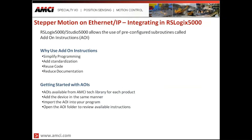In RSLogix 5000 or Studio 5000, we also have the ability to use add-on instructions, which simplify programming and add standardization. The add-on instruction is pre-configured software from the manufacturer — in this case AMCI — so every time it is used in any program it looks exactly the same. There is no need to copy from old programs or hope it matches the last version; it is standardized, repeatable, familiar, and allows code reuse without recreating it each time.